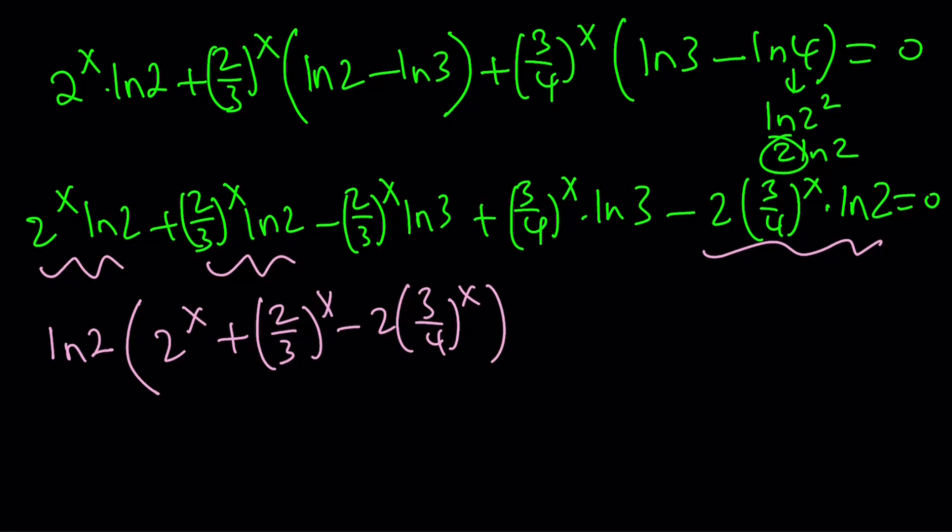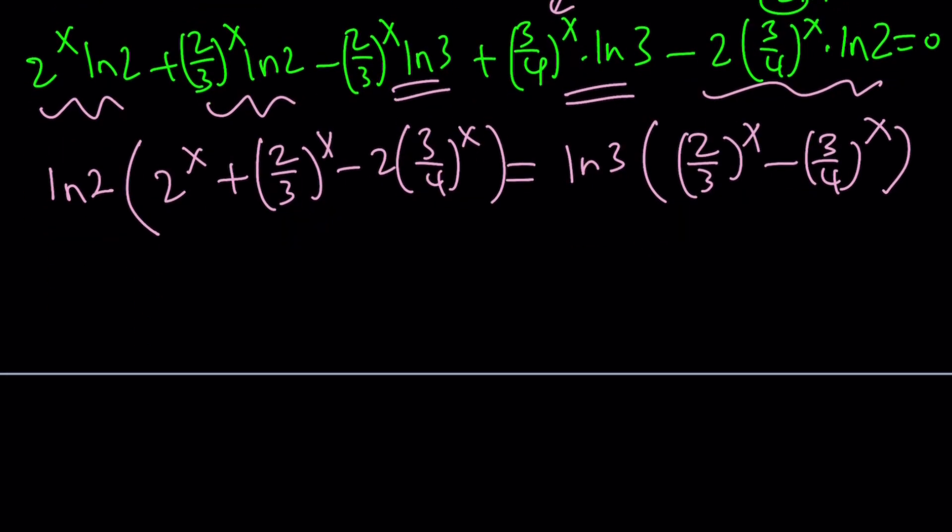And then on the right-hand side, if you put everything here on the right-hand side, everything will be negated. So we're going to get ln(3) times (2/3)^x minus (3/4)^x. Now again, this equation is not very friendly, right? It's not easy to solve.